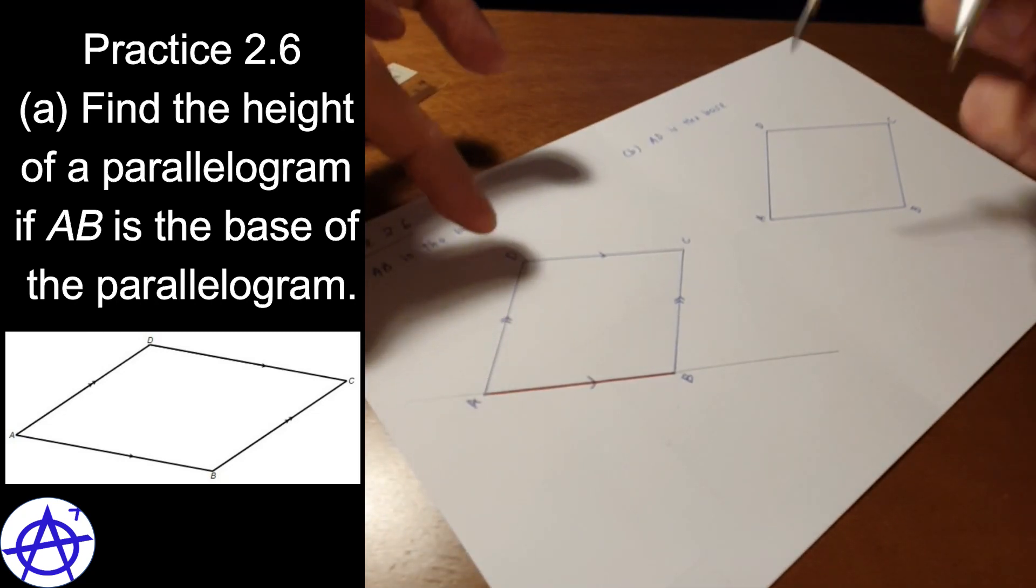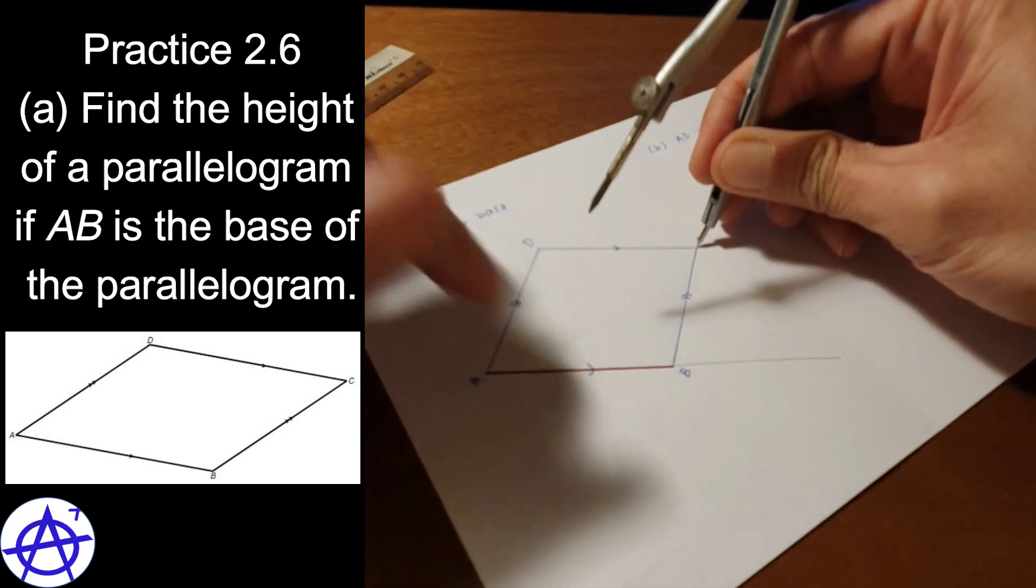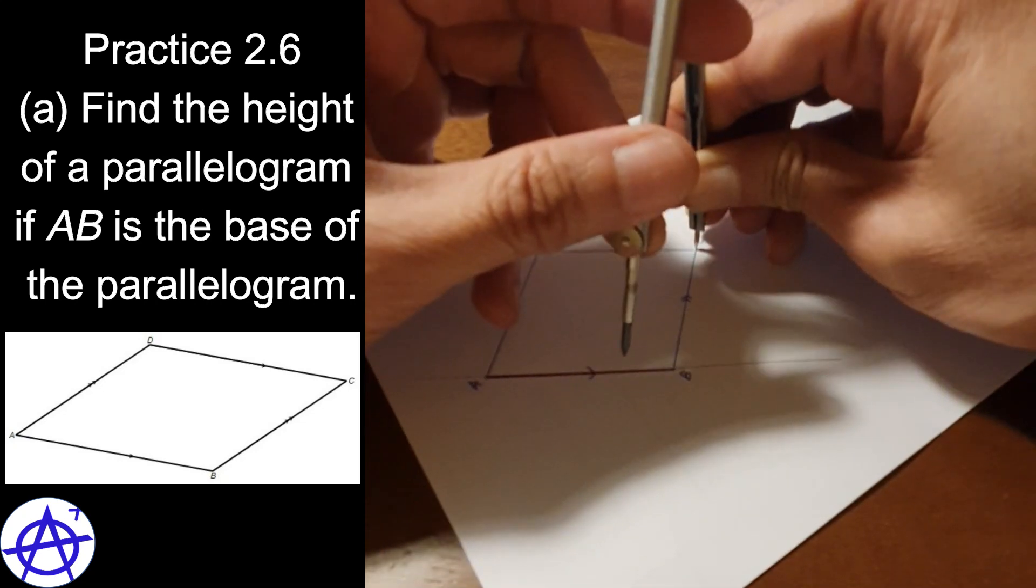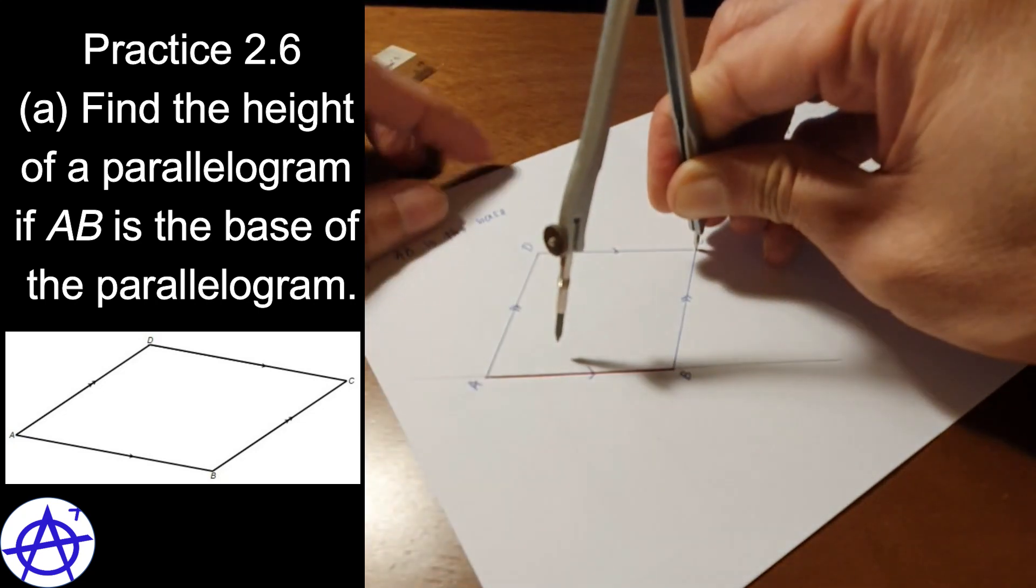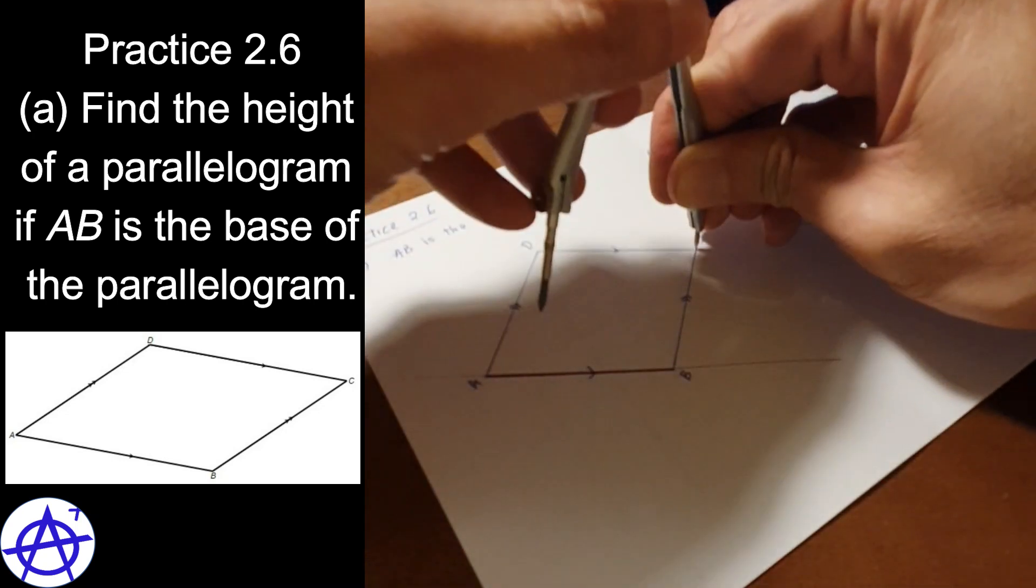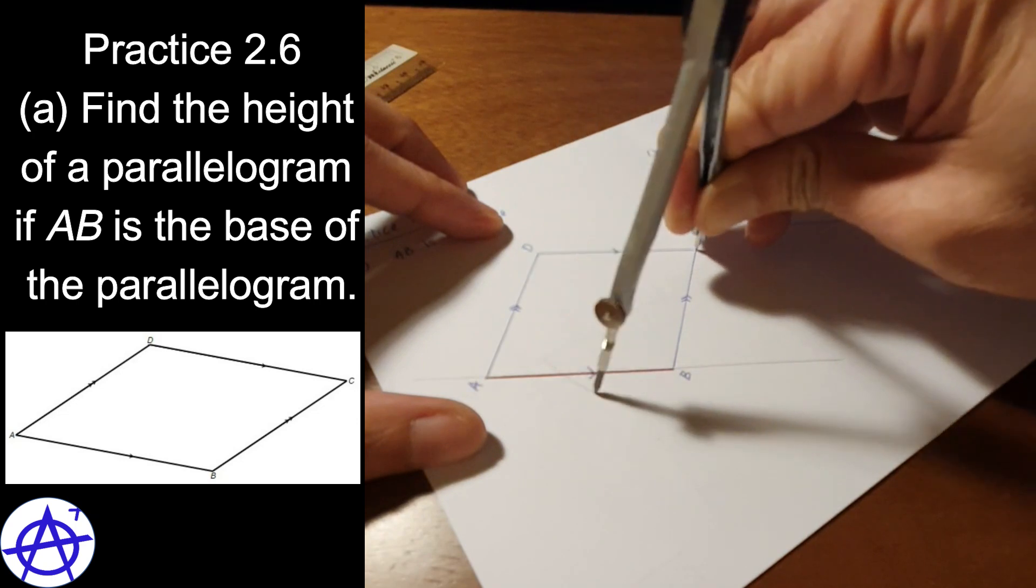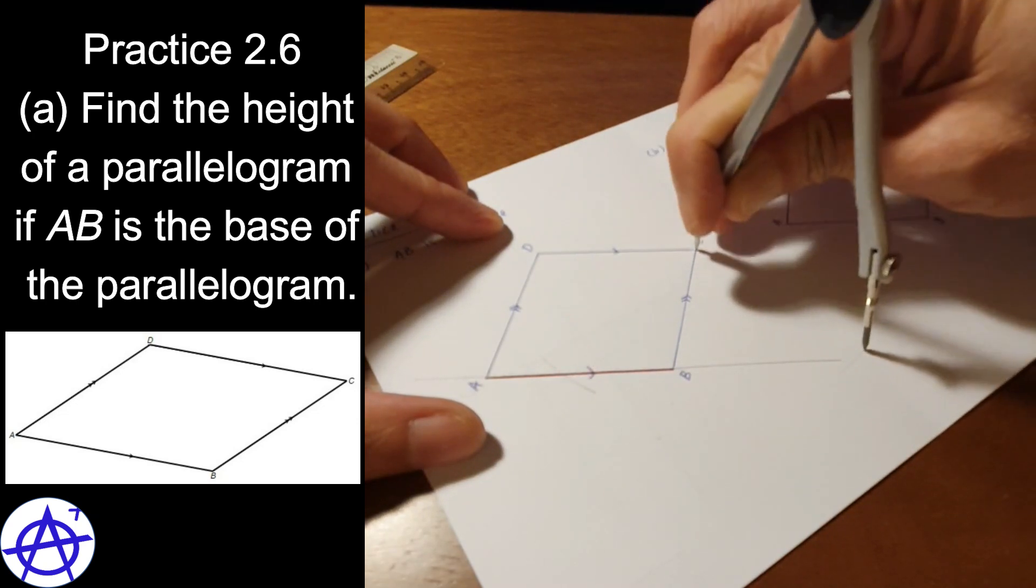So you can use point D or point C, up to you. Let's say I'm using point C because here looks more space. So what I'm going to do is, I extend my compass, as well as I'm able to cut this line AB at two points. So here I cut one point, and then here I cut another point.